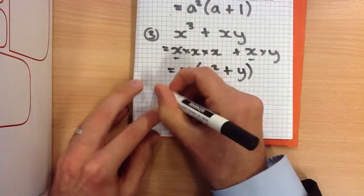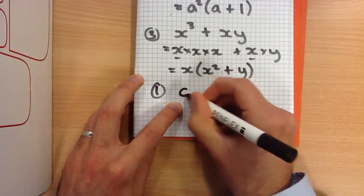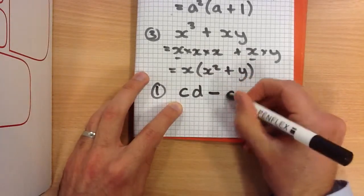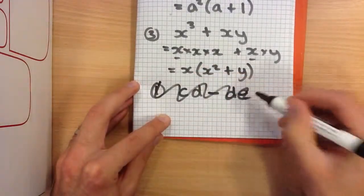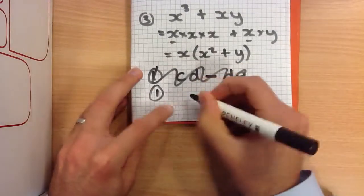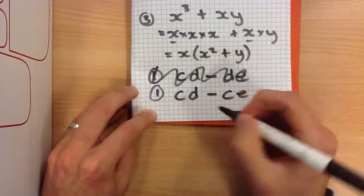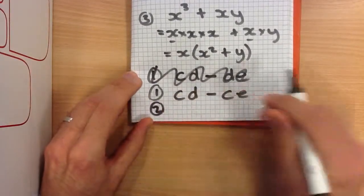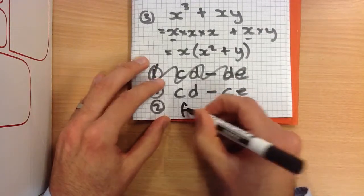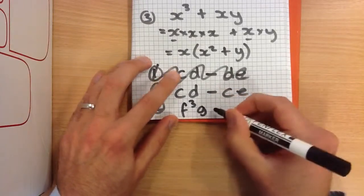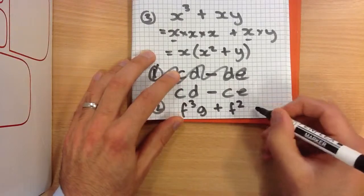Two questions for you now. First, I want you to factorise CD minus CE. And secondly, I'd like you to factorise F cubed G plus F squared H.